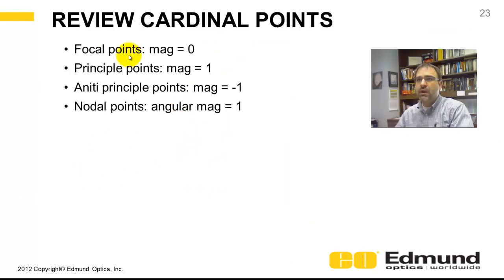In review, focal points, you have zero magnification. The marginal ray height is zero. Principle points, you've got a magnification of one. Anti-principle points, you've got a linear magnification of negative one. And nodal points, an angular magnification of one.